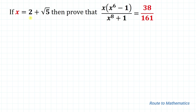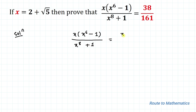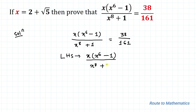We have been given the value of x and we are asked to prove the given equation. So without any delay let's start the solution. We need to prove x · (x⁶ - 1) / (x⁸ + 1) = 38/161. In the first step let's simplify the left hand side.